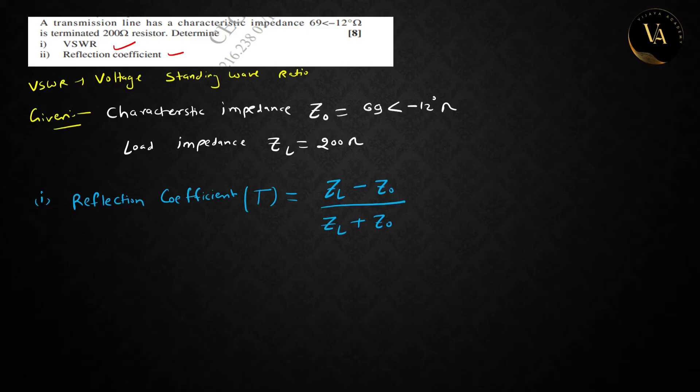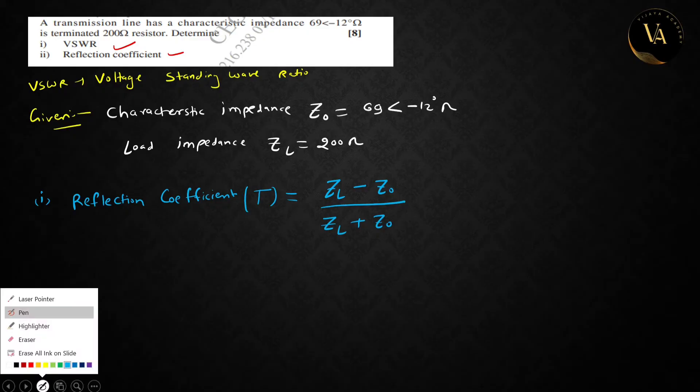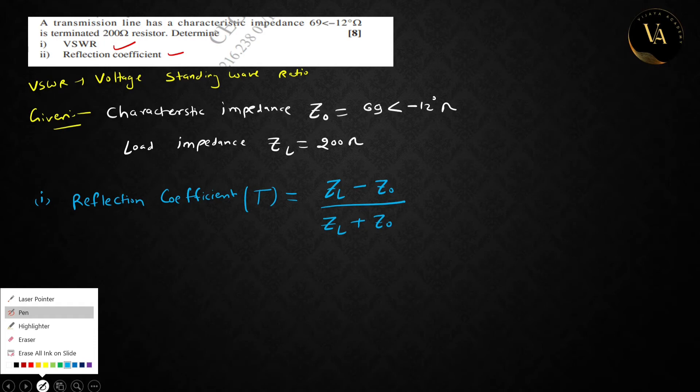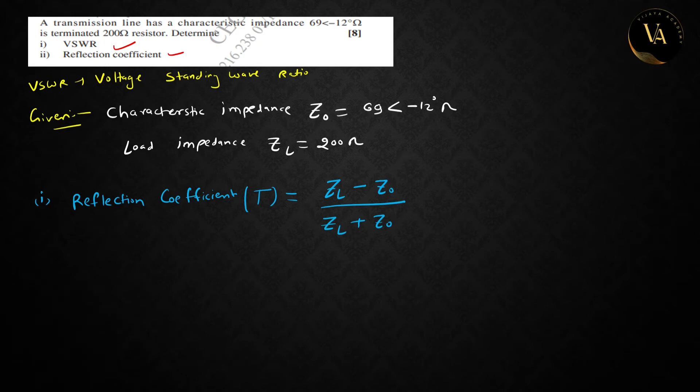We need to find Z₀ in rectangular form. So we have to convert. Angular form is given in polar form. Convert Z₀ into rectangular form.